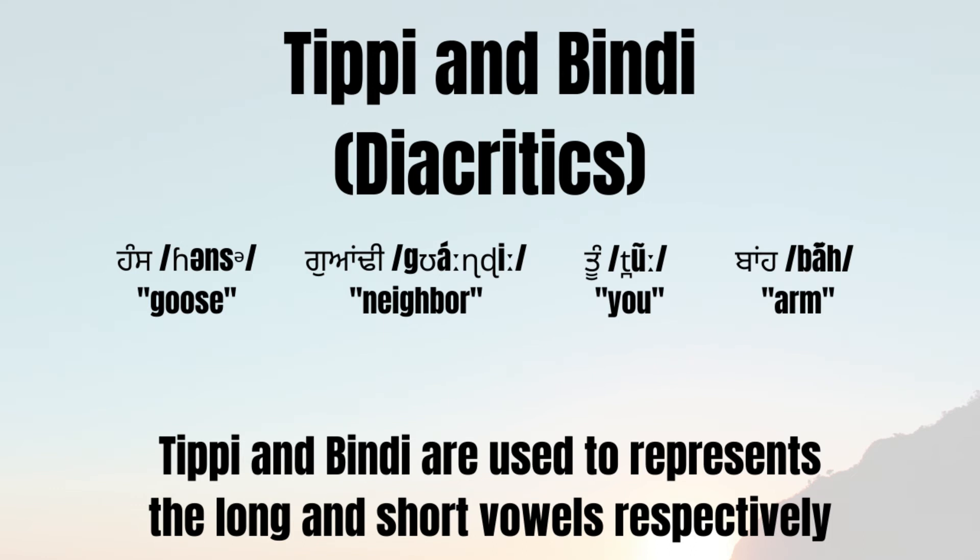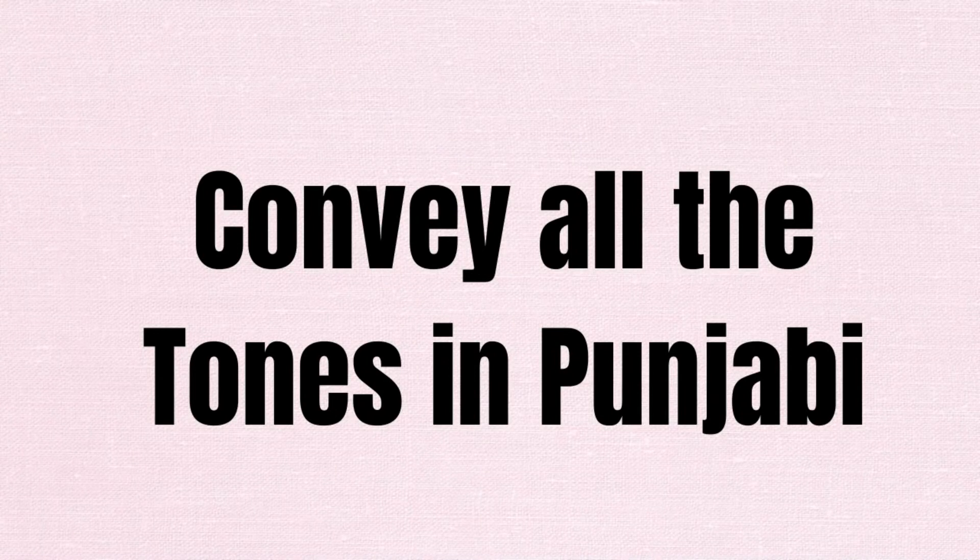Tippi and Bindi are used to represent the long and short vowels in the Gurmukhi script of the Punjabi language. The Gurmukhi script can fully convey the tone of a Punjabi word, and it is considered by some scholars to be the top-notch script of the Punjabi language.